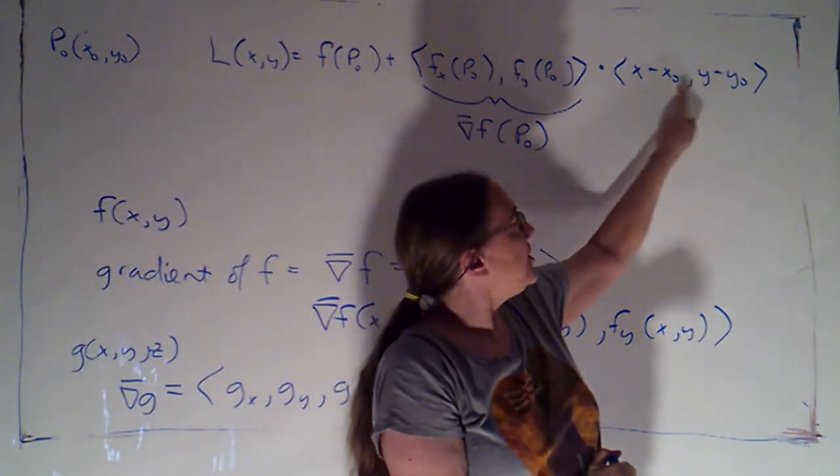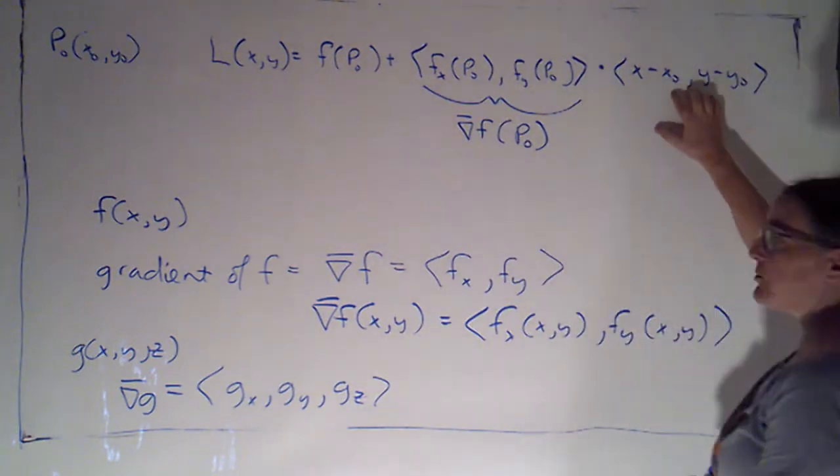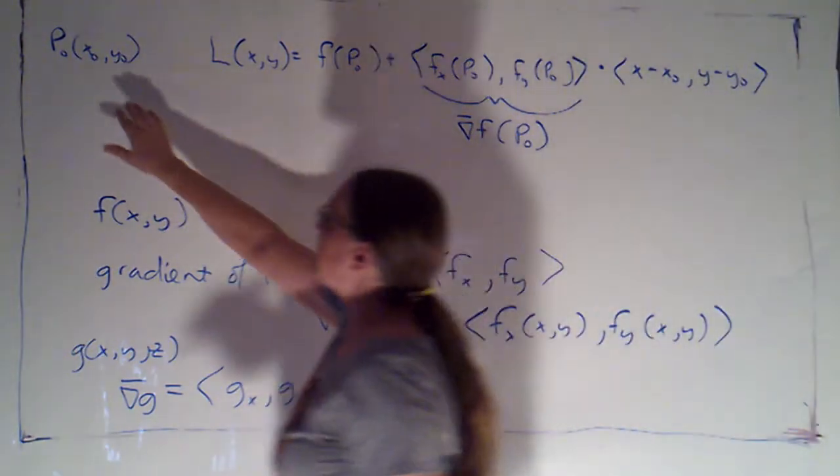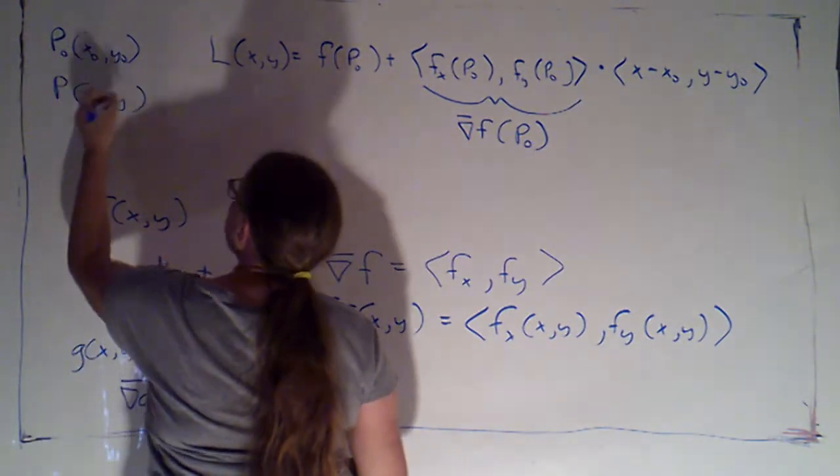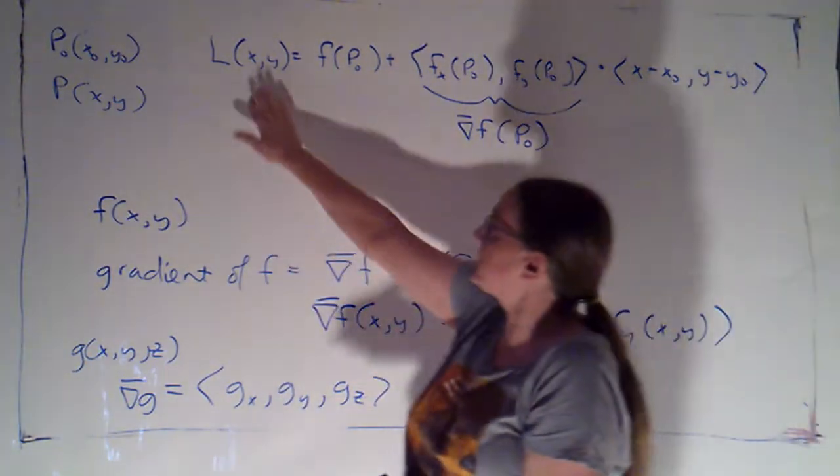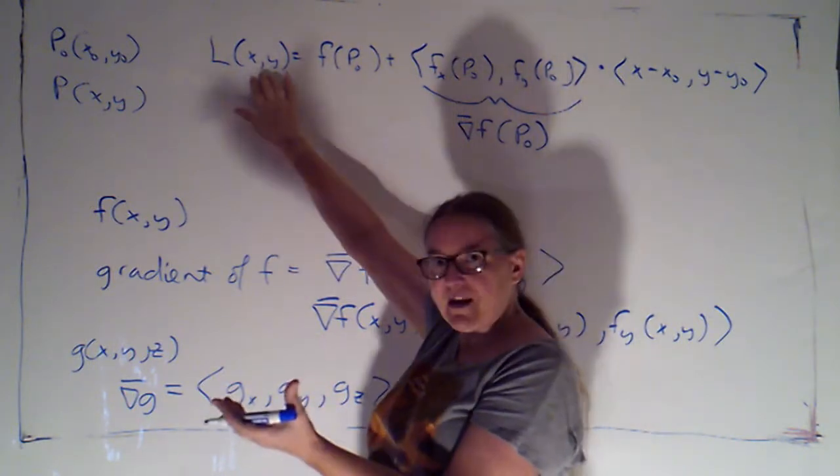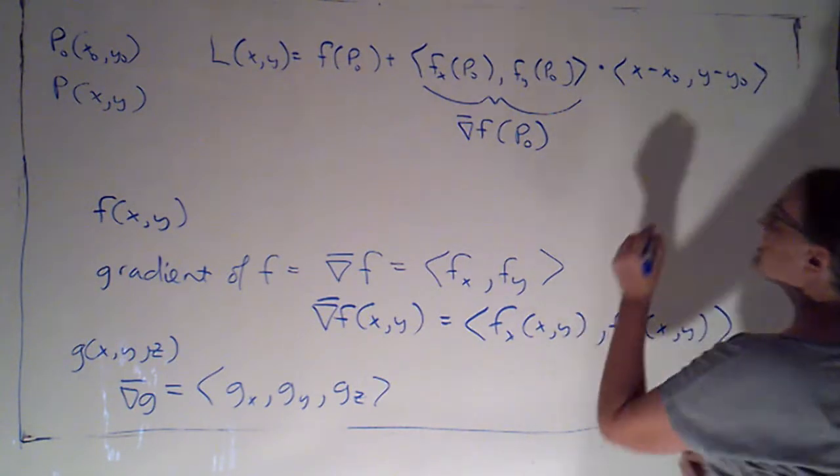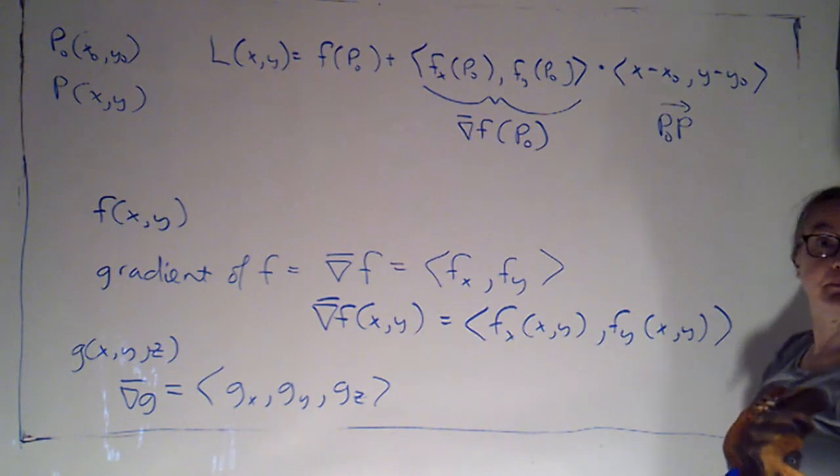Now I can also generalize the name of this vector, which is giving me the amounts of change. Here, in this case, I said p naught was x naught y naught. Well, if I let p represent an arbitrary point in two-space, which I usually do, in fact I could write this as l of p, it's a function of a point in two-space. I could actually denote this as being the vector p naught p.